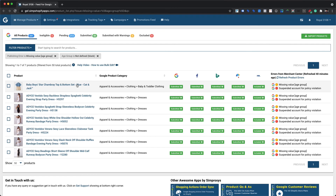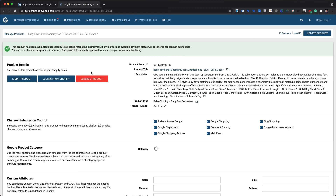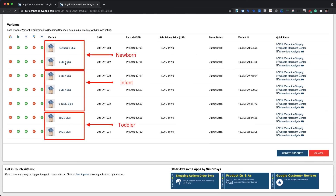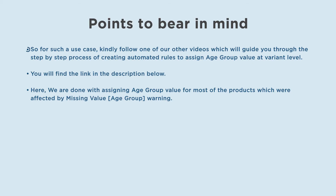If your store setup requires assigning age group at the variant level — for example, if you have created variants based on different age groups or age ranges — please follow one of our other videos, which will guide you through the step-by-step process of creating automated rules to assign age group value at the variant level. The link is in the description below. With that, we are done assigning age group attribute values to most products affected by the missing value age group warning.